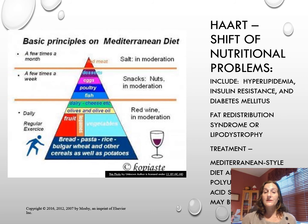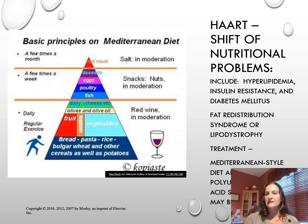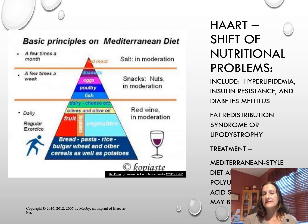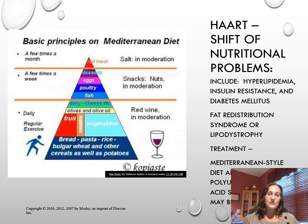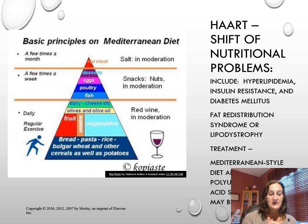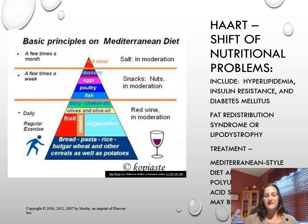The Centers for Disease Control have criteria for HIV wasting, which includes involuntary weight loss of more than 10% in one month, and the presence of chronic diarrhea, weakness, or fever more than 30 days in the absence of any concomitant illness. With the introduction of HAART therapy, we see a shift in nutritional problems — instead of muscle wasting syndrome, patients with HIV AIDS now typically include more cardiac problems such as hyperlipidemia, insulin resistance, and type 2 diabetes. We also see lipodystrophy where fat is redistributed like metabolic syndrome — android obesity in the abdominal area. We usually recommend a Mediterranean lifestyle with inclusion of good fats, polyunsaturated fats, and omega-3 fatty acids.